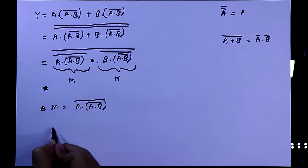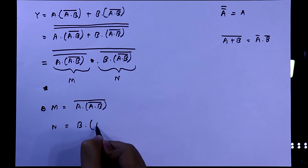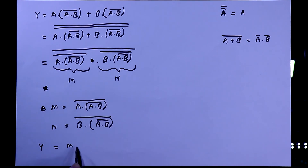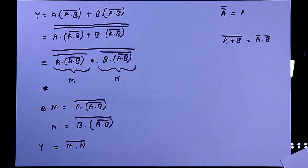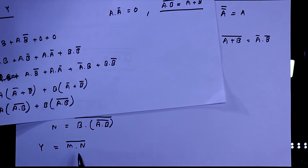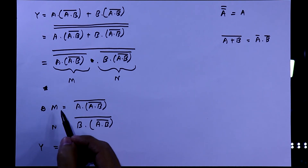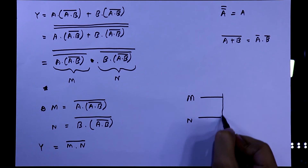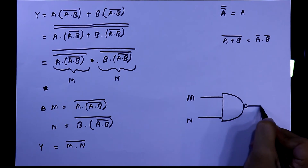M equals A dot (A dot B-bar) whole bar, and N equals B dot (A dot B-bar) whole bar. So Y equals M dot N whole bar. From this we can see it is similar to the NAND gate expression Y equal to A dot B whole bar, so we can take M and N as the two inputs of a NAND gate.